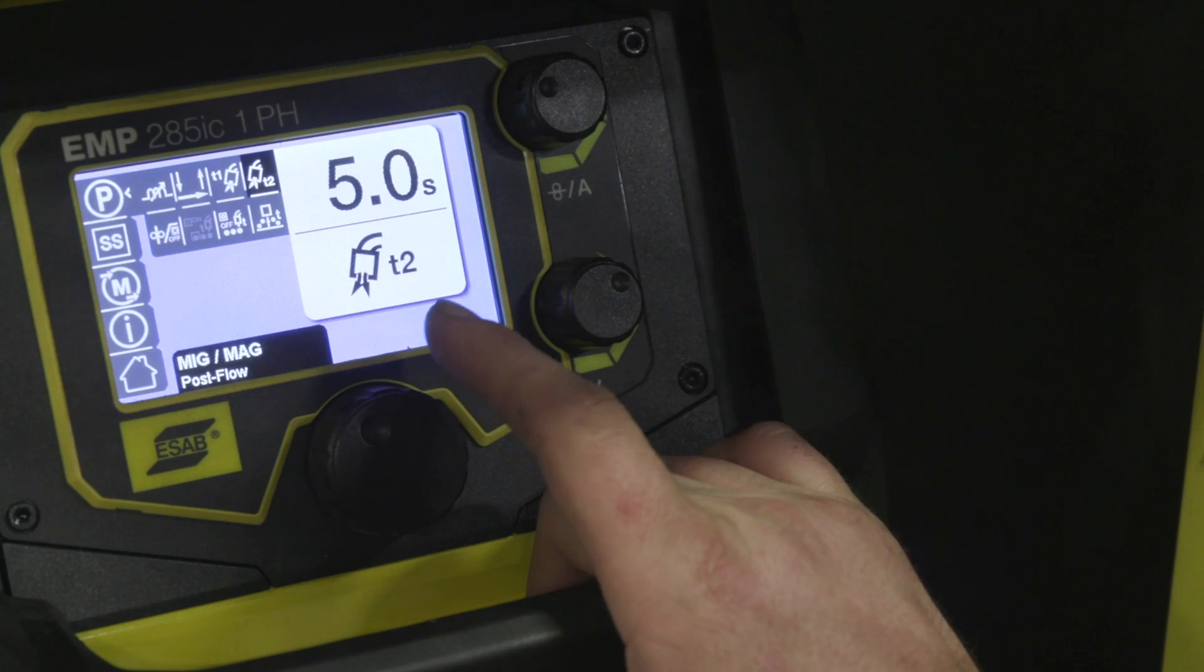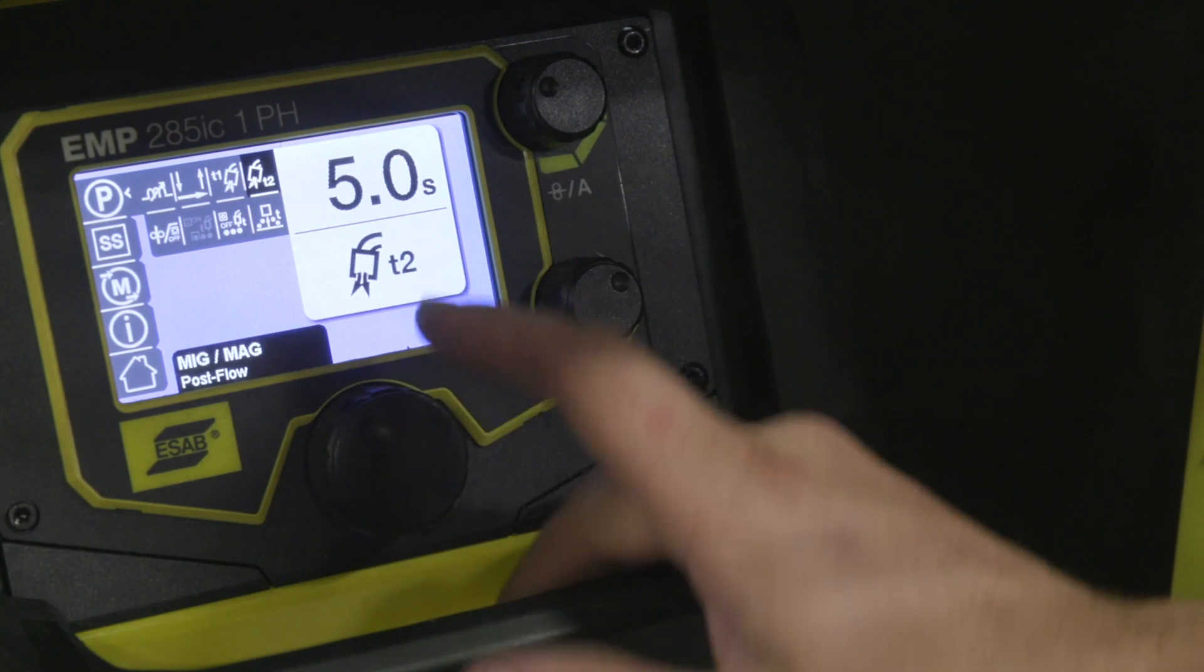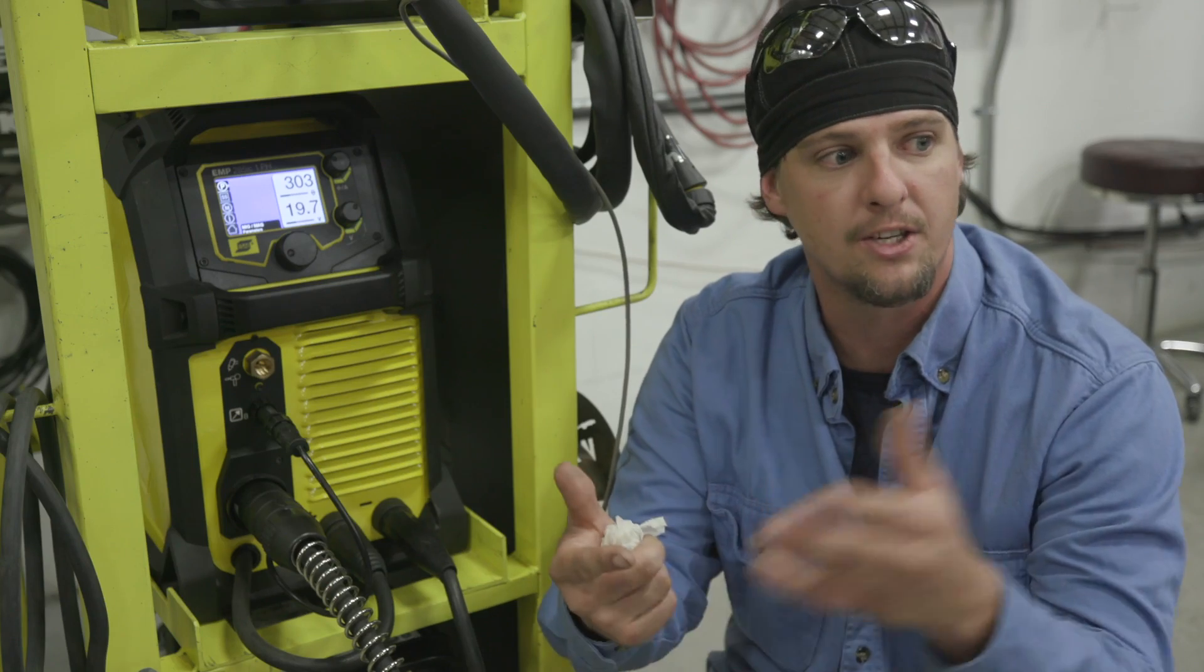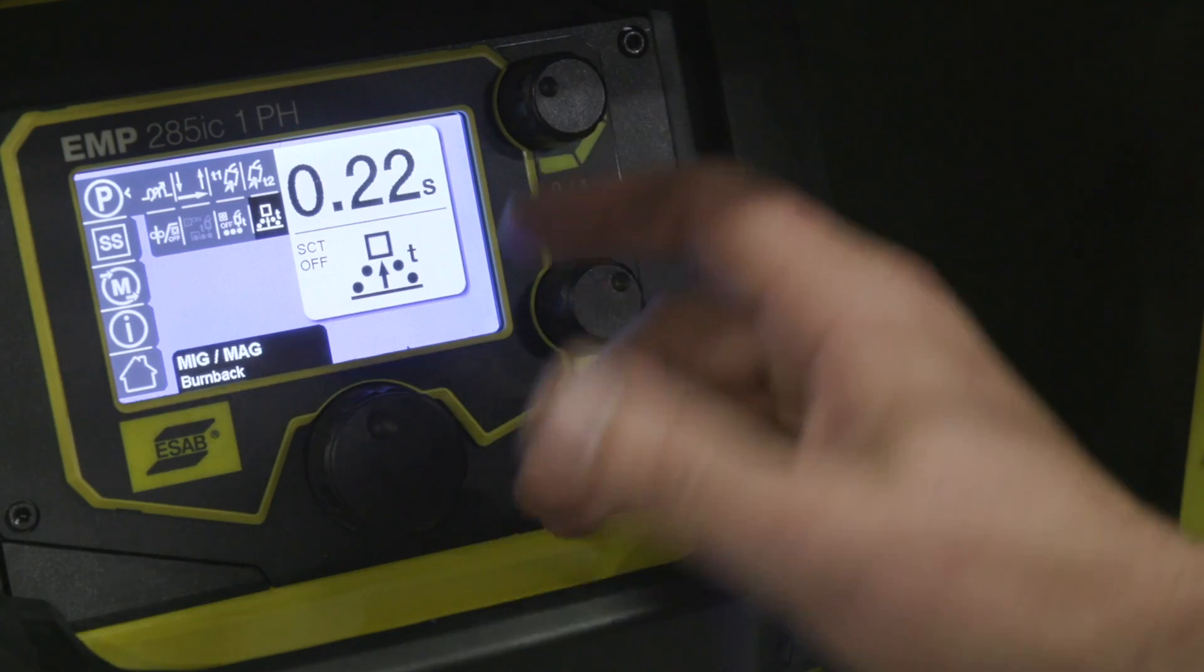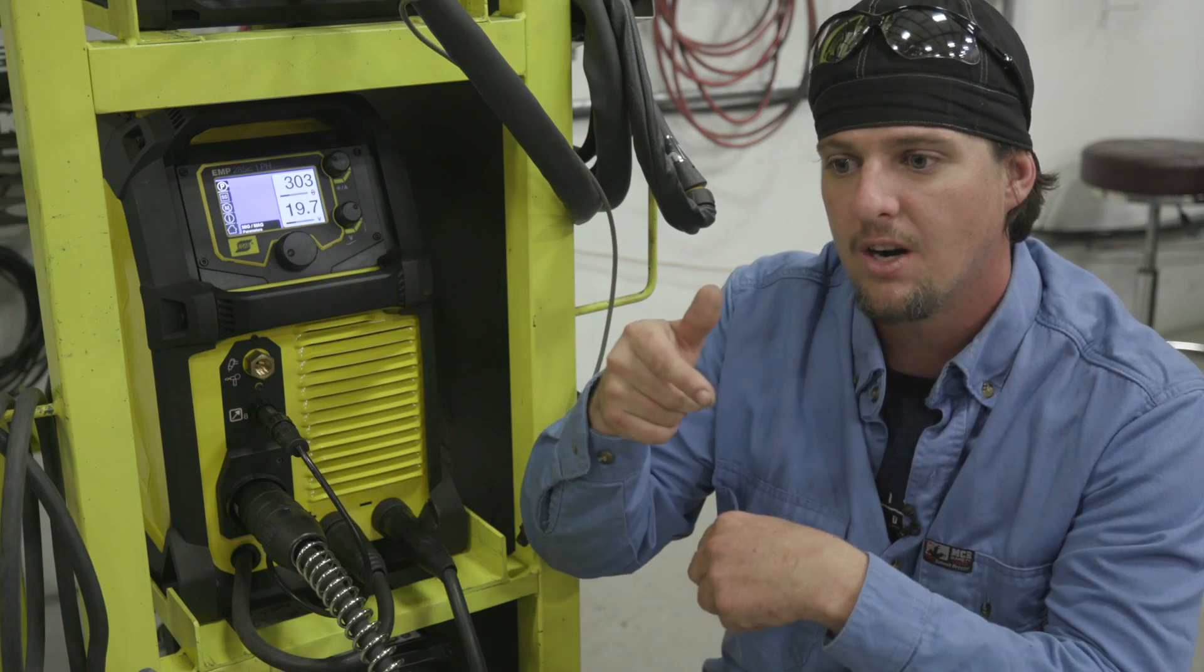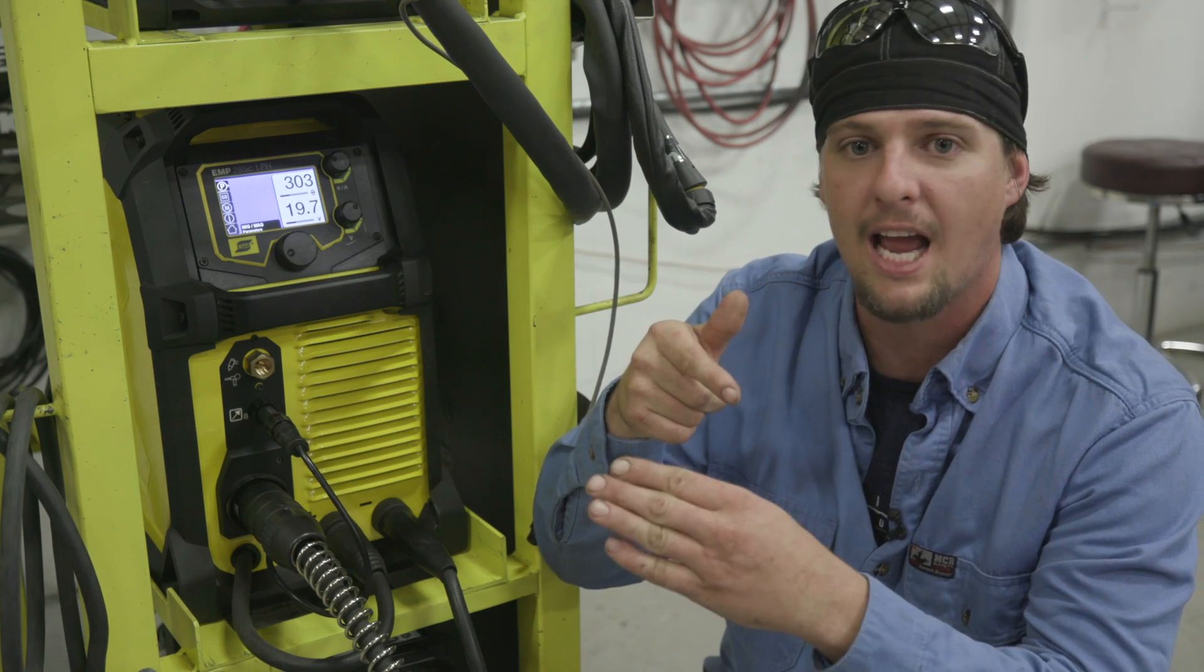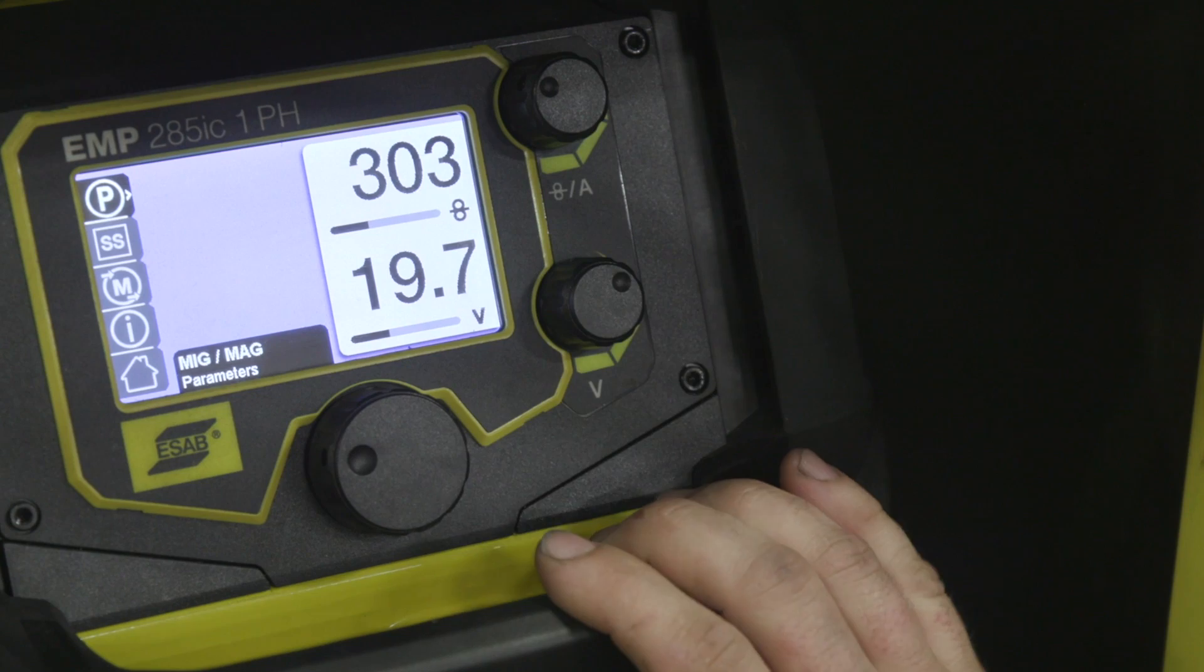I want that to kind of soften up and float out like ER70S-6 or at least try. On my post-flow, I usually, this machine's five seconds. I got it all the way to the max. I like to hold my gun just like TIG, like you're doing with a gas lens on stainless. My burn back's about half a second because with stainless right when you stop welding, it basically wants to stick right there. So I basically have it up like a half second or 0.22 of a second. And my wire feed speed's 303.